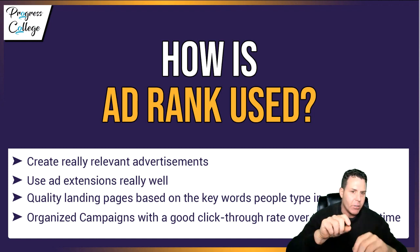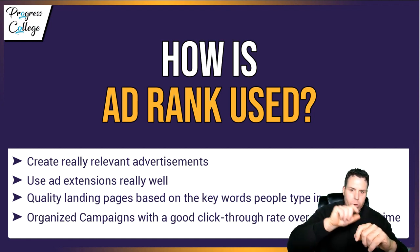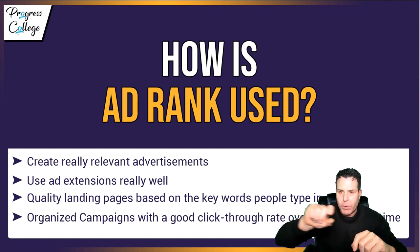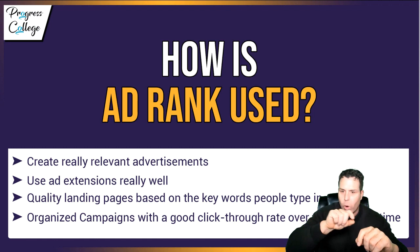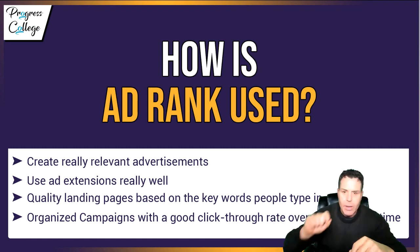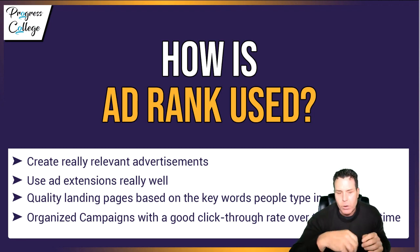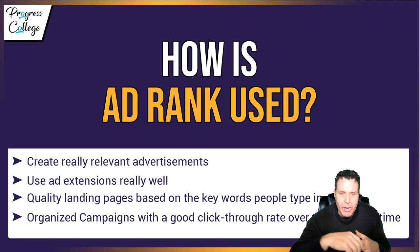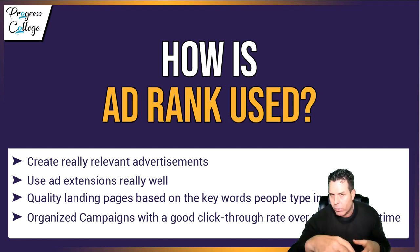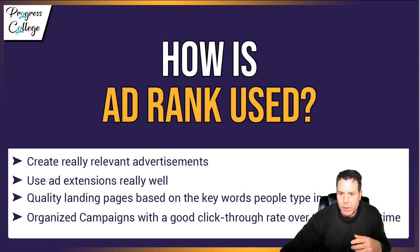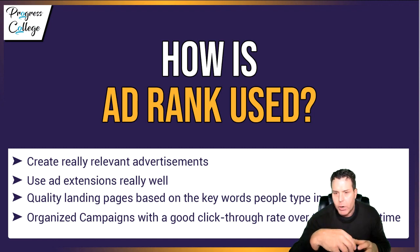You want to use ad extensions very well. Ad extensions are going to be relevant to the keyword being searched. If you're looking for Las Vegas plumbers, you might want an extension that says '24-hour plumbing emergency service' — because if someone is searching for a Las Vegas plumber, they probably need something fairly quickly. You also want to have a quality landing page based on the keywords people type in. If someone searches Las Vegas plumbers and your landing page talks about Las Vegas locksmiths, that wouldn't be very relevant. And you want very organized campaigns related to your keywords to help your click-through rate increase over time.